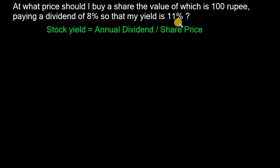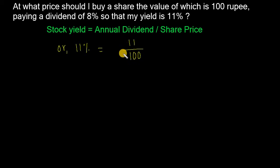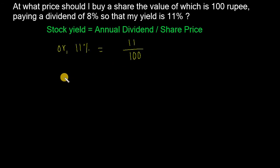So here stock yield is 11%, which we can write as 11 divided by 100. Annual dividend equals 8 rupees and share price equals 100 rupees. We write this as 11 rupees divided by 100 rupees.